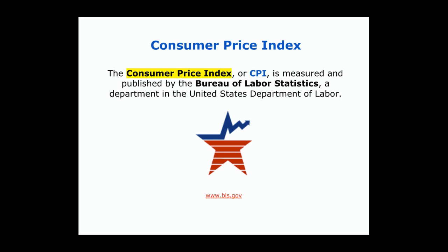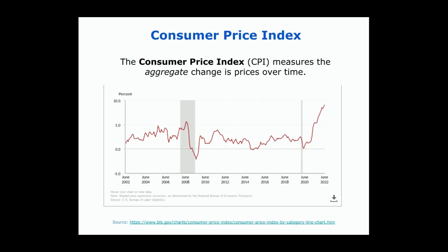The Bureau of Labor Statistics measures, calculates, and publishes something called the Consumer Price Index, which is a macroeconomic indicator that tries to measure the level of prices overall. Here we can see the Consumer Price Index over the last 20 years or so. Prices are sometimes increasing in the 5% range, sometimes decreasing and even negative. On average, this is probably about 2% to 3%, which economists generally consider to be low, steady, and anticipated inflation. But there are times when it's quite higher, above 5%, or even as high as 9% to 10% as it was in the middle of 2022.